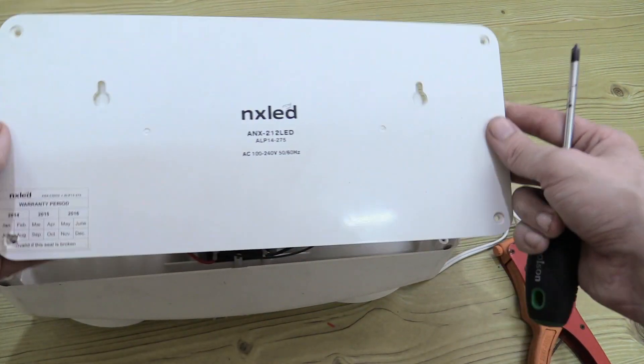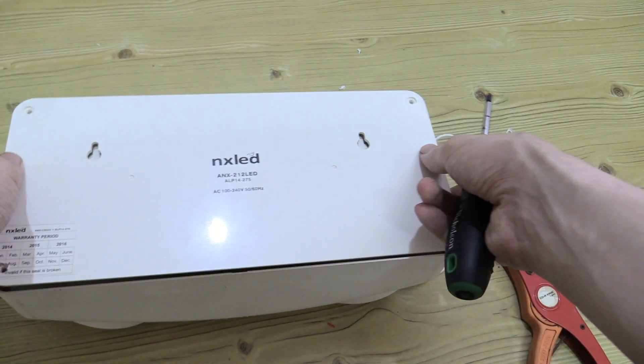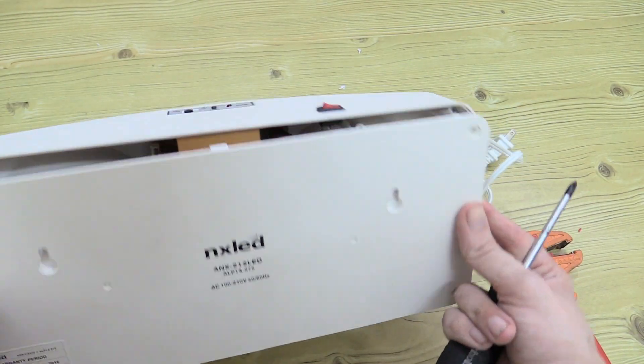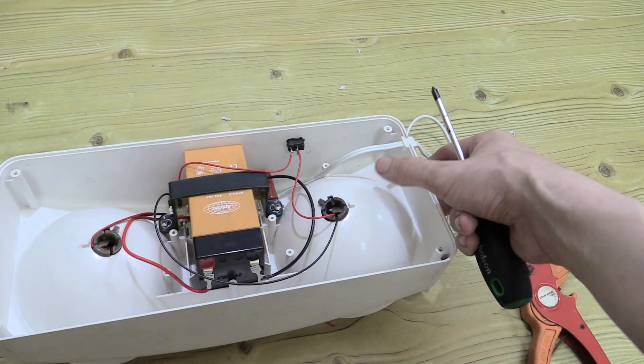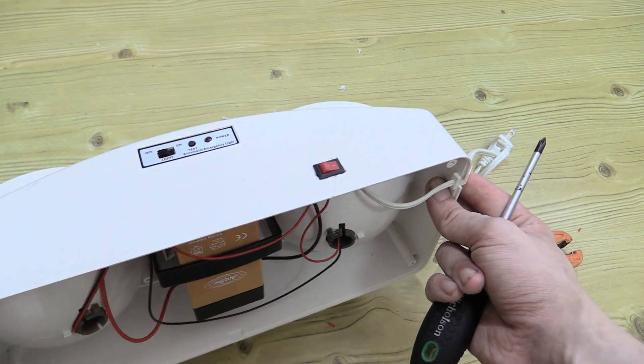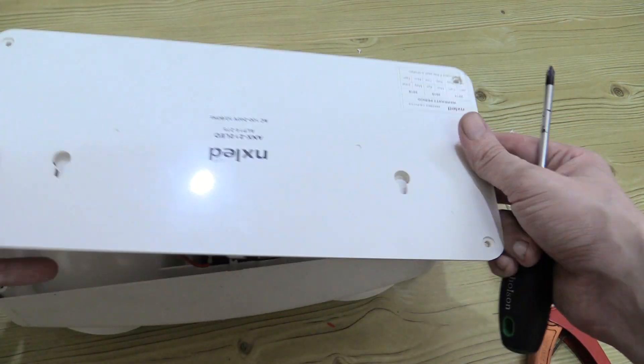And something I've just realized with this light is you can put the cover on like that and it will hang one way, for instance, like this on a wall. Or you can put it on this way and then it will hang the other way. So depending on whether you want the controls at the bottom or the top, you have that option. So I didn't even realize that before, that's pretty cool.